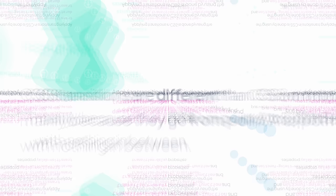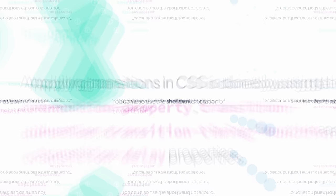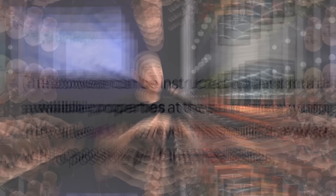In this lesson, we learned that CSS transitions are a CSS feature that allows for smooth and gradual changes in element properties. They're different from CSS animations mainly because they go from point A to point B with nothing in between. You apply them using transition-property, transition-duration, transition-timing-function, and transition-delay, or the shorthand transition notation. You can transition multiple properties at once by separating them with commas, or use the value 'all' — though this should be avoided due to possible performance issues. Now let's focus on actually creating motion with transitions.